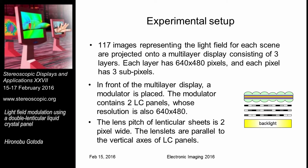The modulator consists of two LC panels and a diffuser. These panels have 640 by 480 pixels, and the two LCD panels also have 640 by 480 pixels.